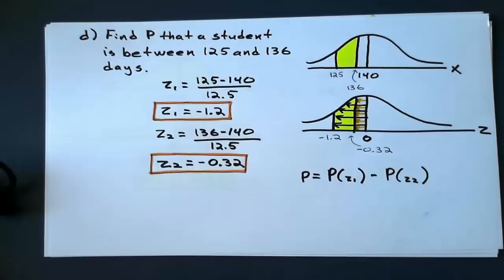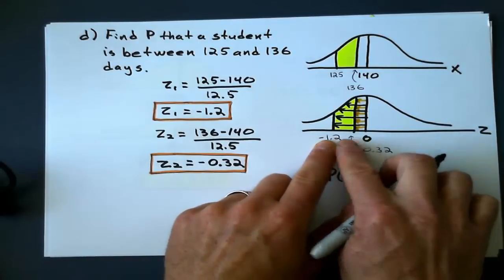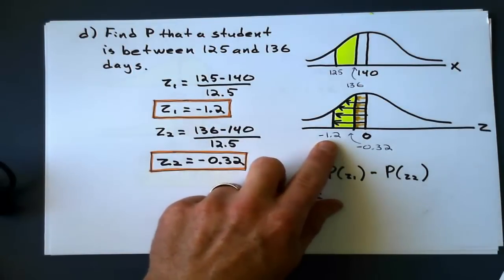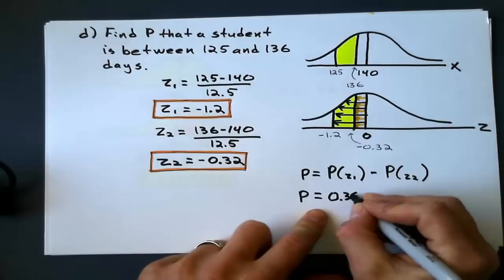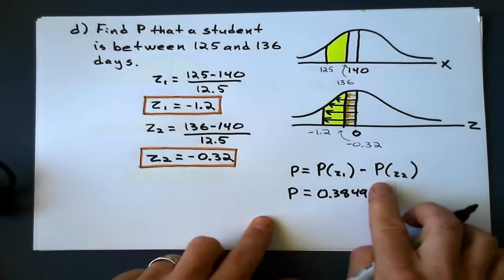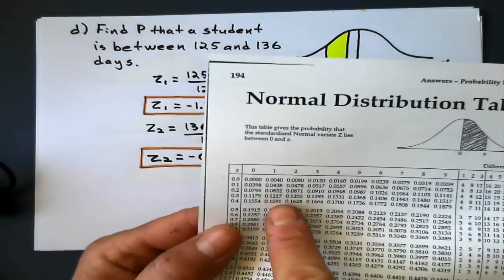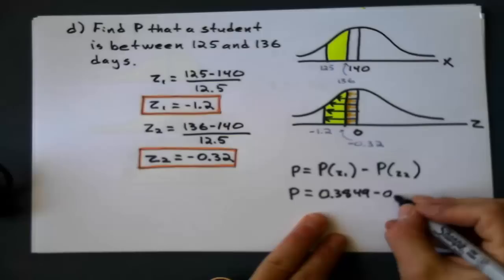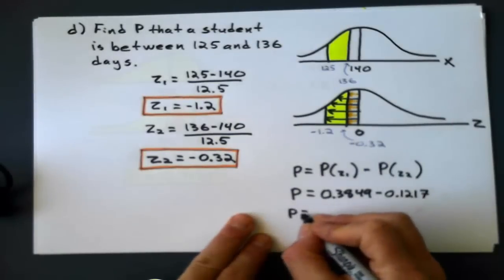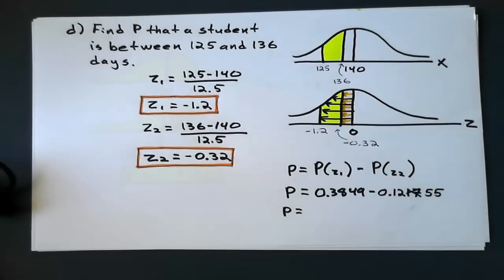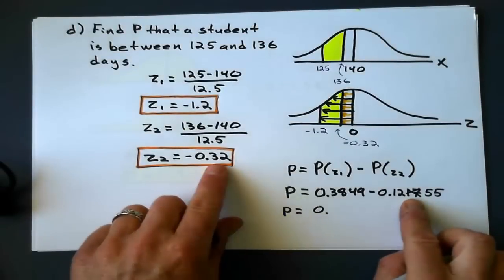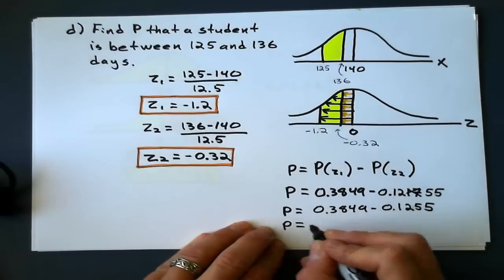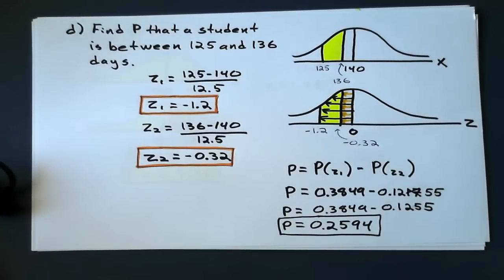So this will be the probability of Z1 minus the probability of that Z2 value. And remember, the negatives are, it's symmetrical. So it's going to be the same on the other side. So that's why I can just change that negative 1.2 to positive 1.2. So I look up 1.2, and I think I've already done that one. 0.3849 minus 0.32. Remember, there's no negative Z value. So I just look up 0.32, which is 0.1255. Subtract the 2, and I get a value of 0.2594.